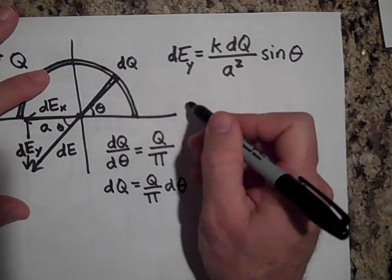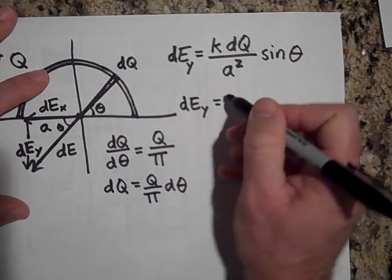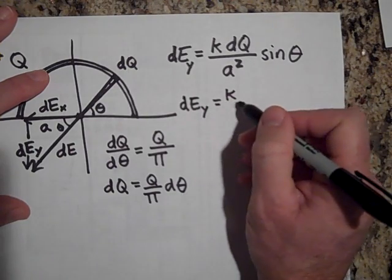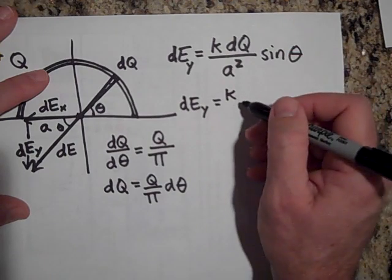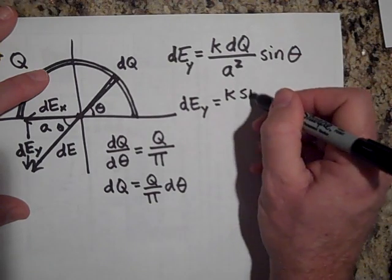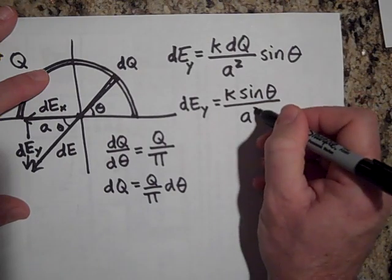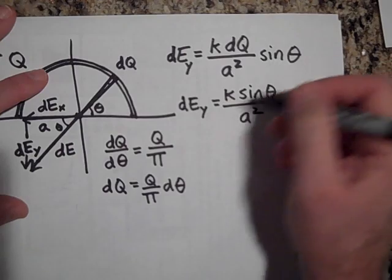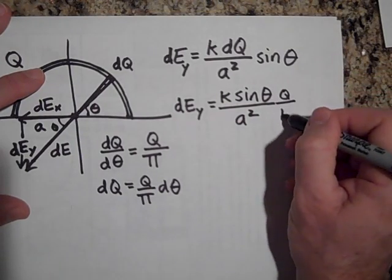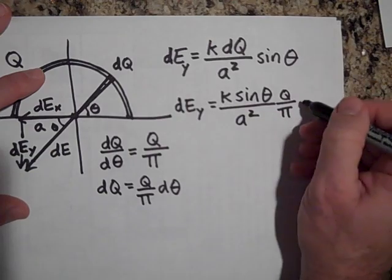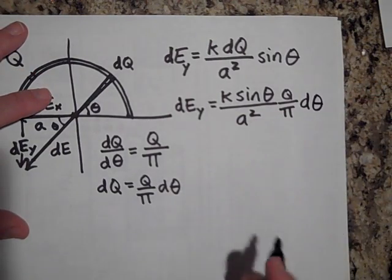Okay. Let's go put that in up there. So dE_Y is equal to K times sine of theta all over a squared. And then for DQ, I'm going to put in Q over pi times D theta.